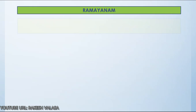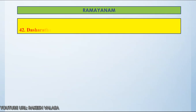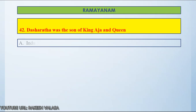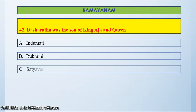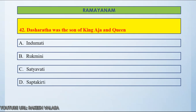Question number 42: Dasharatha was the son of King Aja and Queen — Option A, Indumati. Option B, Rukmini. Option C, Satyavati. Option D, Saptakirti. Let us count and start.